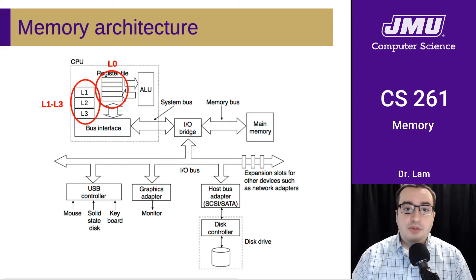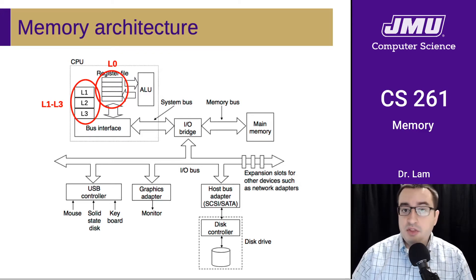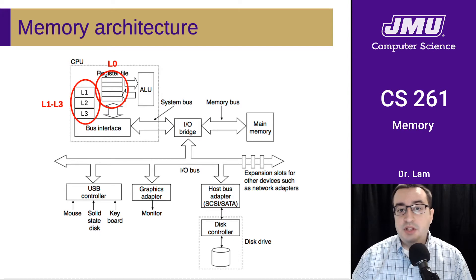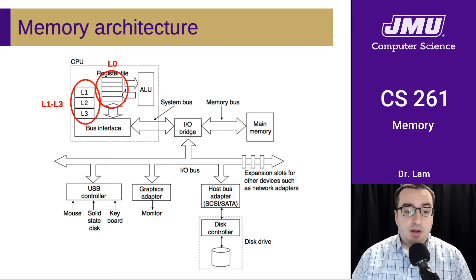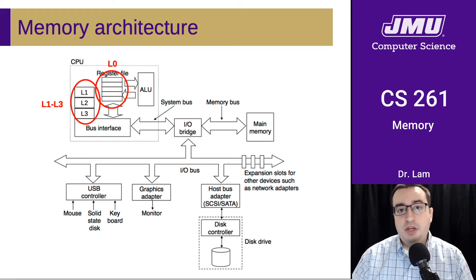The next levels are the different levels of caches, which we'll talk more about next time. These are on the CPU, but not directly connected to the ALU typically. It's going to be a little bit slower to access these, but they are still quite fast, and it's important to try to use these as much as possible because they are still on the CPU.